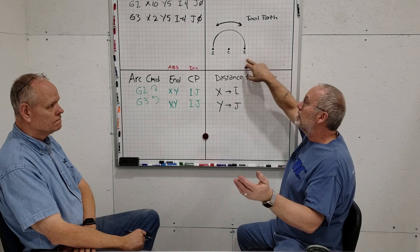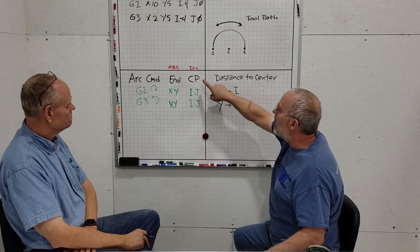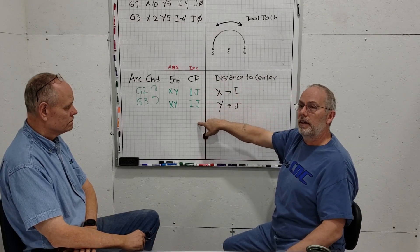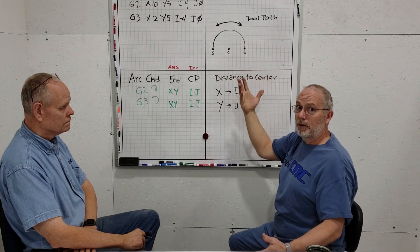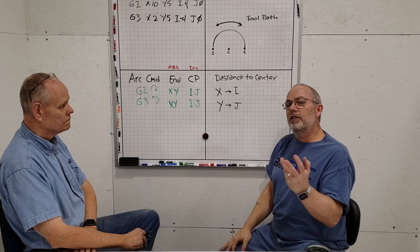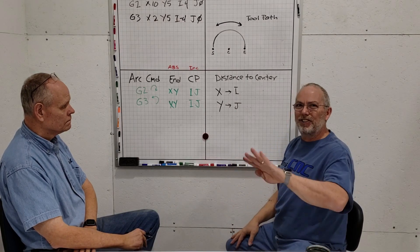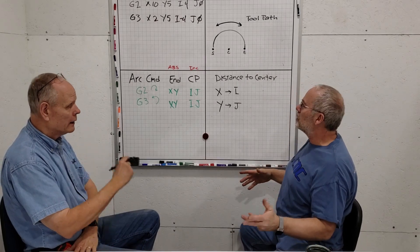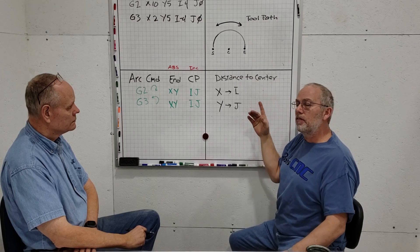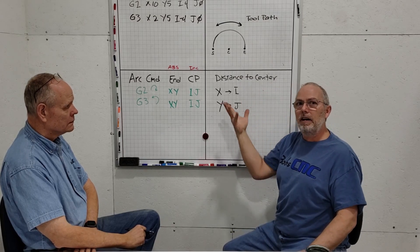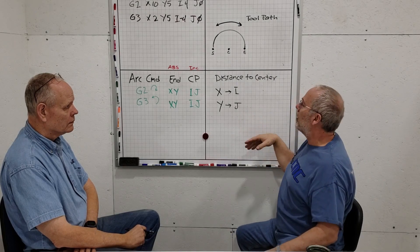In G0 or G1, all you need is where you end in XY because it's a straight line. However, because we have an arc, we need one more thing: the center point. The center point defines where that arc center is. We're going to do that in vector components I and J.